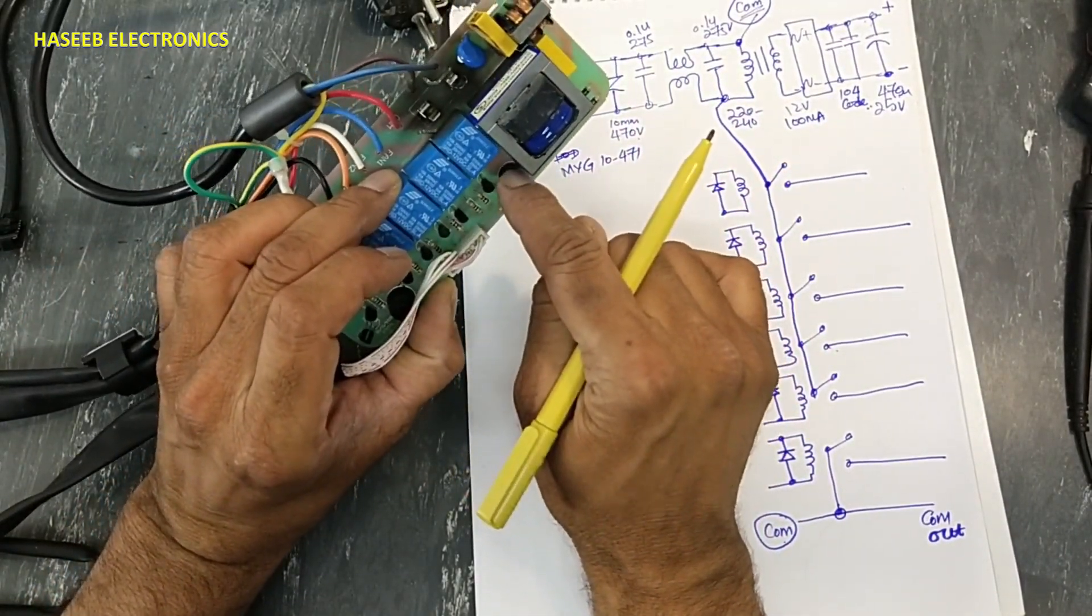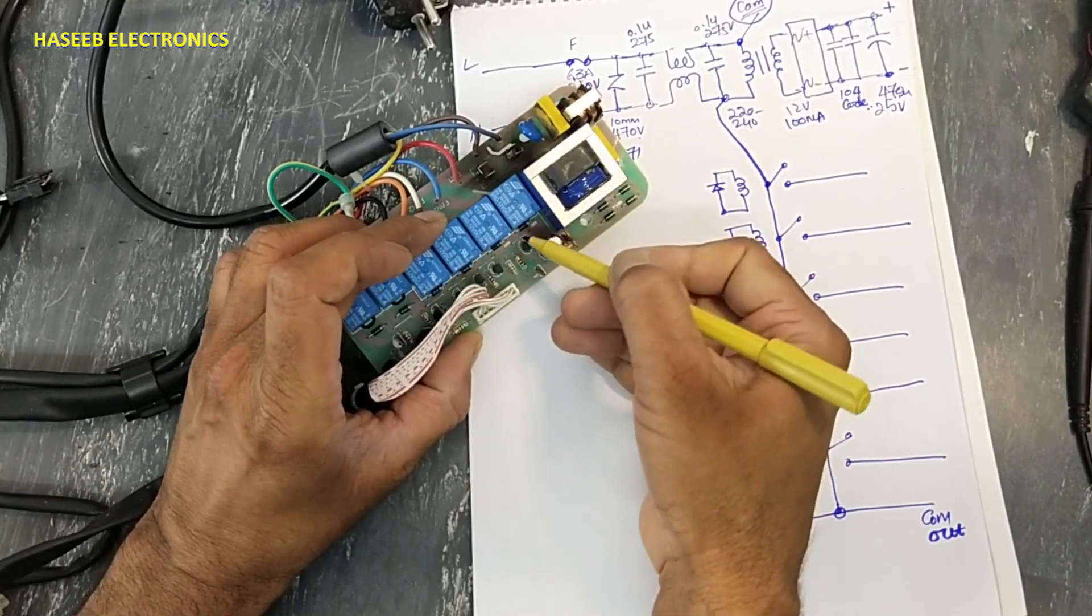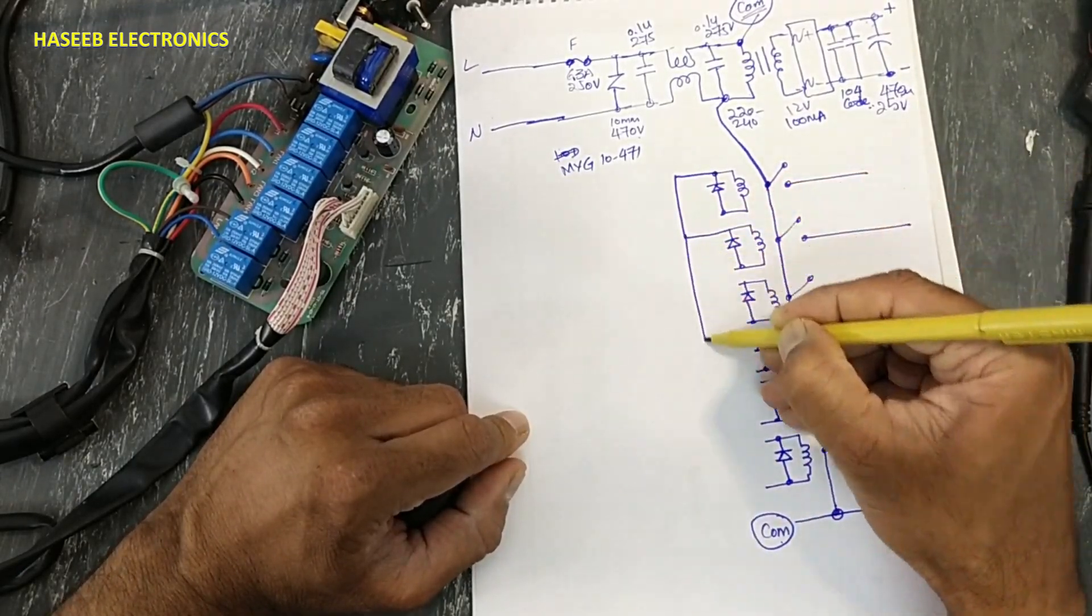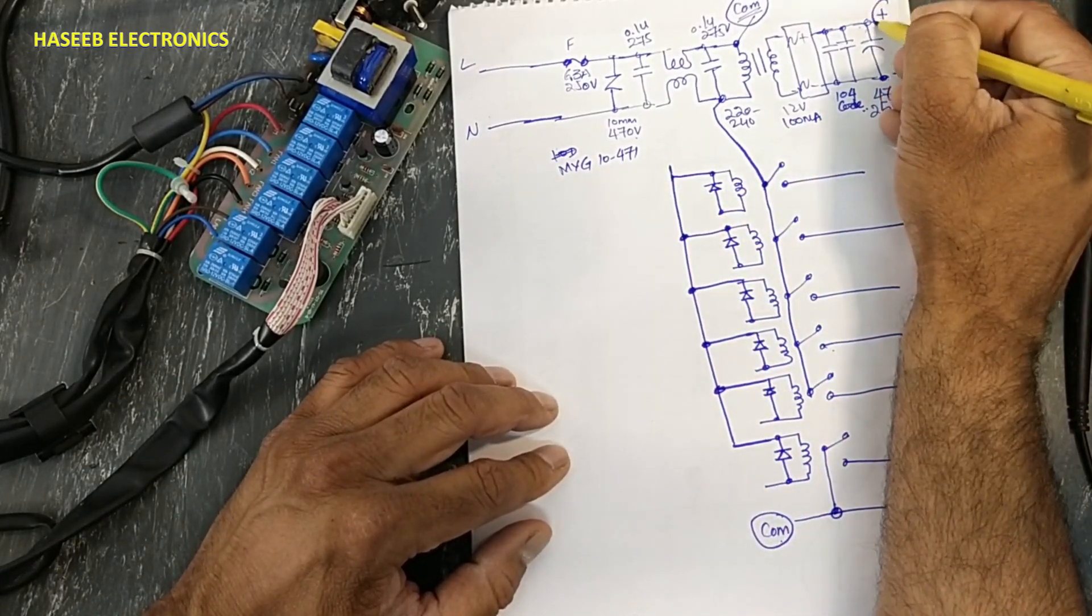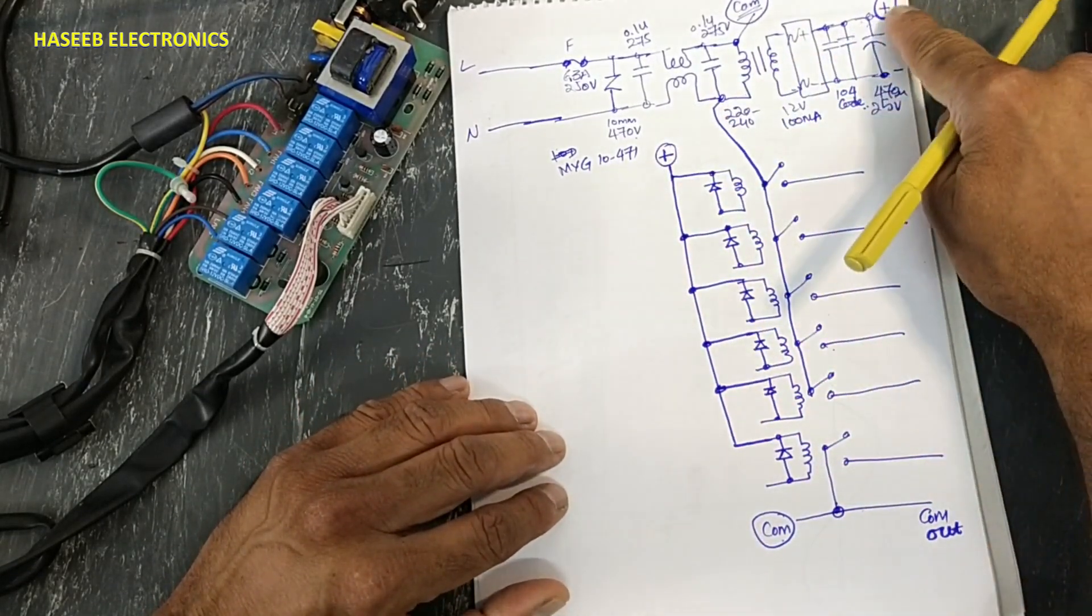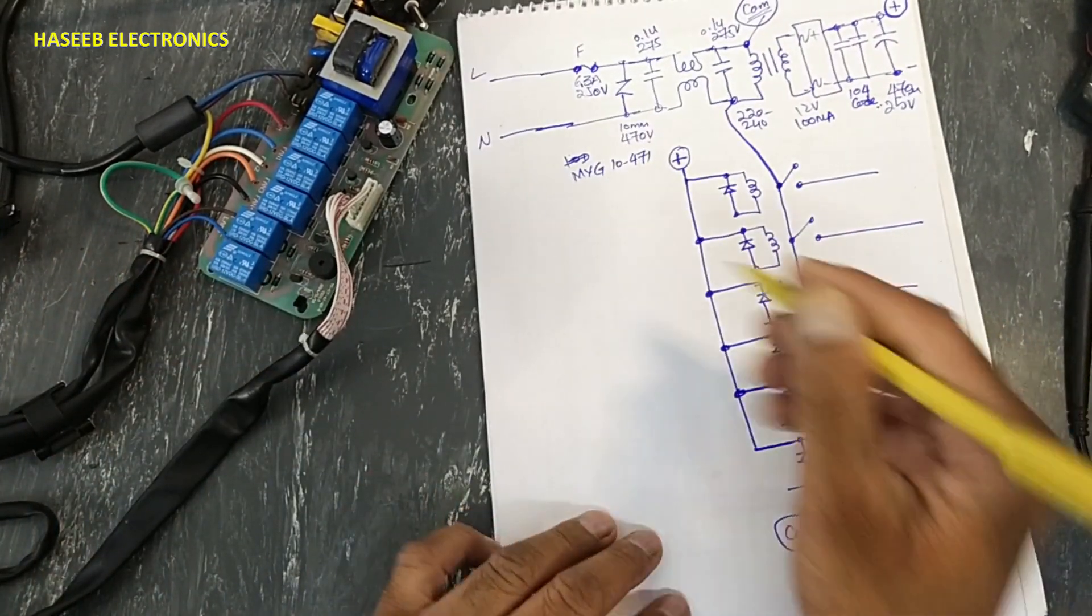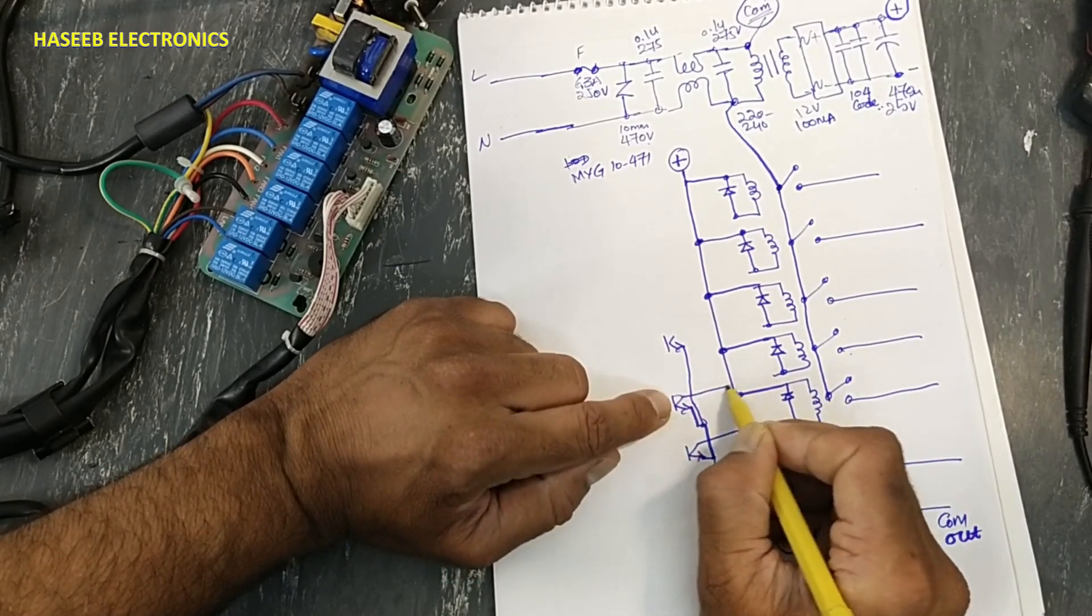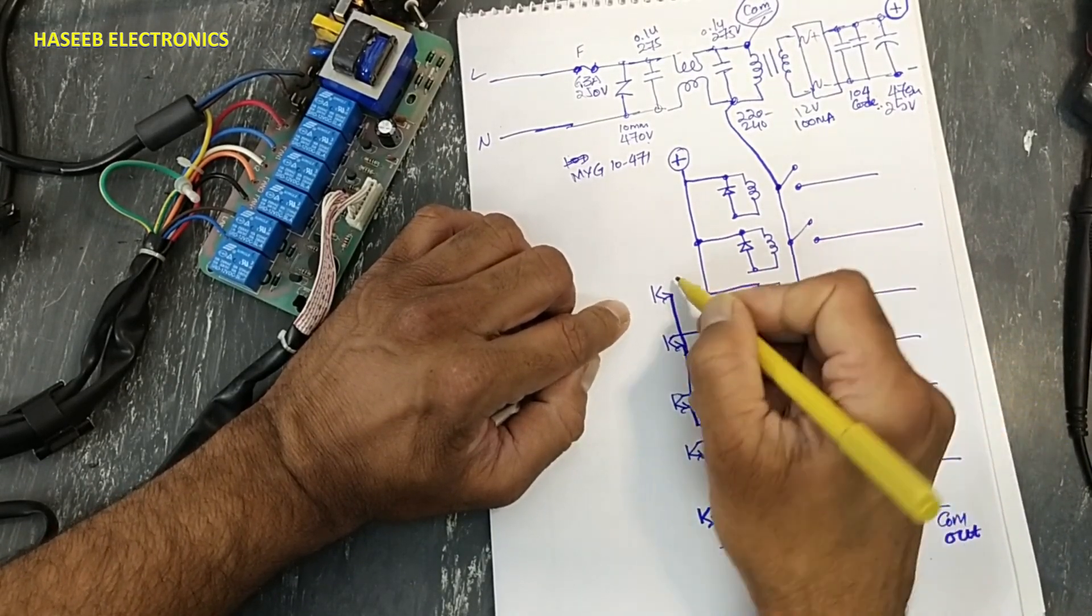The positive terminal of this capacitor, these all points are connected together through this jumper. Here are jumpers, so now I will connect. And it is connected to this positive point that is here. Positive with this positive, negative. Now here it is using SS 8050 transistor.